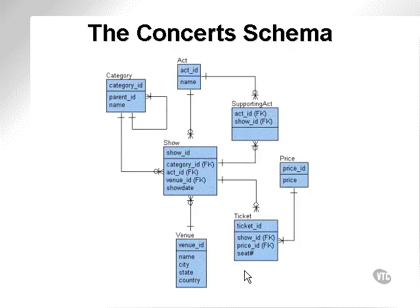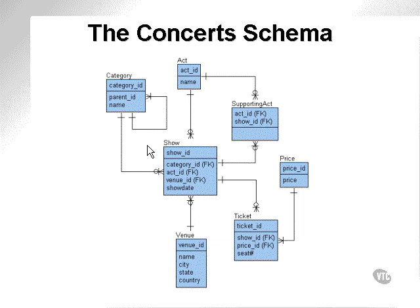A quick look at the concept schema. We have a lot of scope for joins. Starting with the ACT, SHOW, and VENUE: the ACT and VENUE keys are stored as foreign keys in the SHOW table, and there is no direct hook between the ACT and VENUE tables, so the only way to join ACT and VENUE is through ACT, SHOW, and VENUE. Another join potential is the category table, which can self-join to itself with a hierarchical fishhook join. Another join is between category and SHOW, and obviously a join between category, SHOW, ACT, and VENUE.